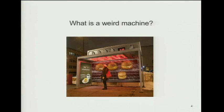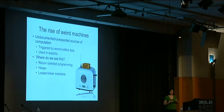What is a weird machine? They've always existed, but there wasn't necessarily a name for them. It's just undocumented, unexpected sources of computation in some target — in an executable, embedded hardware, or similar. Weird machines are everywhere and can be triggered by weird or crafted data. They're often used in exploits. Return-oriented programming is a weird machine: you craft up a stack and suddenly you're executing something that normally isn't there, something unexpected, because of the way things are laid out in memory.